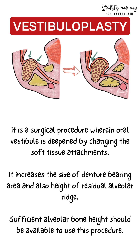There are two types of vestibuloplasty: mucosal advancement and secondary epithelization. The Kazanjian technique falls under secondary epithelization. In secondary epithelization, the mucosa of the vestibule is used to line one side of the extended vestibule, and the other side heals by growing a new epithelial surface. It is indicated when there is sufficient bone but the mucosa is insufficient in quantity or quality.